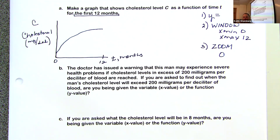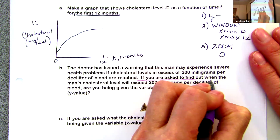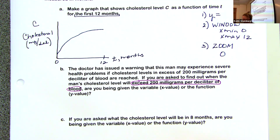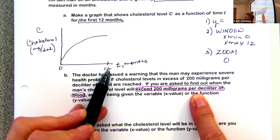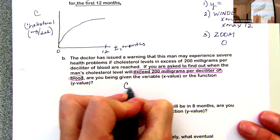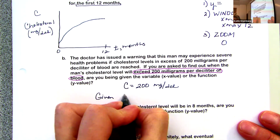Part B says the doctor has issued a warning that this man may experience severe health problems if cholesterol levels exceed 200 milligrams per deciliter. You're asked to find out when the man's cholesterol will exceed 200 milligrams per deciliter. When determining what's given — 200 milligrams per deciliter — that's a huge hint, because C is measured in milligrams per deciliter. So we were given the function value: C equals 200 milligrams per deciliter.